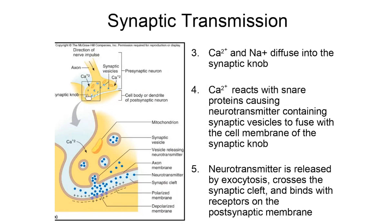Here we have the synaptic knob magnified more highly. The synaptic knob contains the neurotransmitter — represented as little blue dots — stored inside it. Once the action potential reaches the synaptic knob, calcium channels and sodium channels open. Calcium is at a higher concentration outside the cell, so when calcium channels open, calcium moves into the synaptic knob. That calcium reacts with snare proteins, which cause vesicles containing the neurotransmitter to fuse with the plasma membrane and release the neurotransmitter by exocytosis.